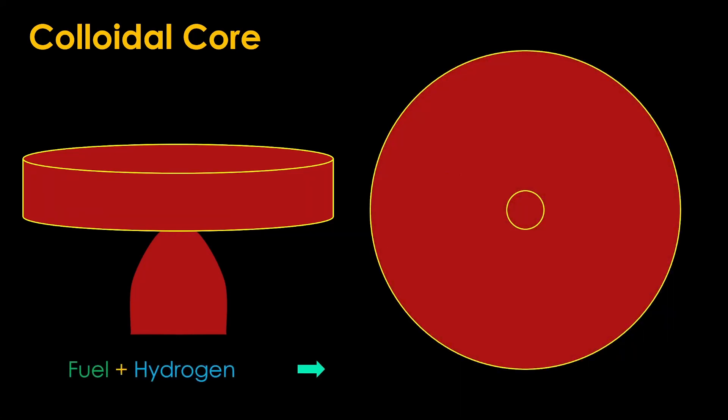You then take your fuel particles, uranium particles coated in zirconium carbide for toughness, and mix them with hydrogen. That mixture is injected through a specially designed set of nozzles and the nozzles plus veins in the chamber create a swirling vortex.